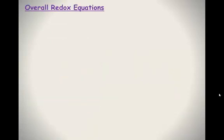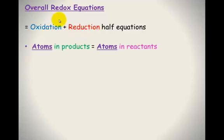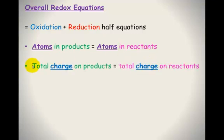For your overall redox equations, it's important that the oxidation and reduction half equations are added together to make the overall redox equation. We must make sure that the atoms in the products are equal to the atoms in the reactants — atoms don't get created or destroyed. The total charge on the products must also equal the total charge on the reactants. Now I'm going to show you how to put those two half equations together.